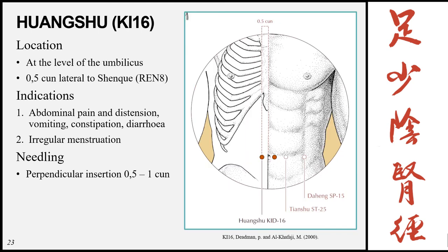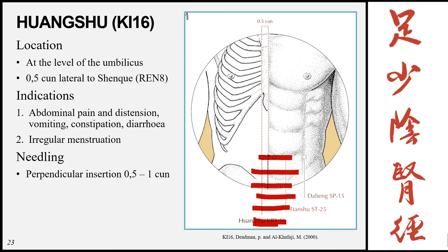Huangshu, Kidney 16, is located at the level of the umbilicus, 0.5 cun lateral to Ren 8 or 0.5 cun lateral to the umbilicus. Note that on the lower abdomen there is one kidney point at every cun from the pubic symphysis up to the umbilicus. Indications: abdominal pain and distension, vomiting, constipation, diarrhea, and irregular menstruation. Needling: perpendicular 0.5 to 1 cun.